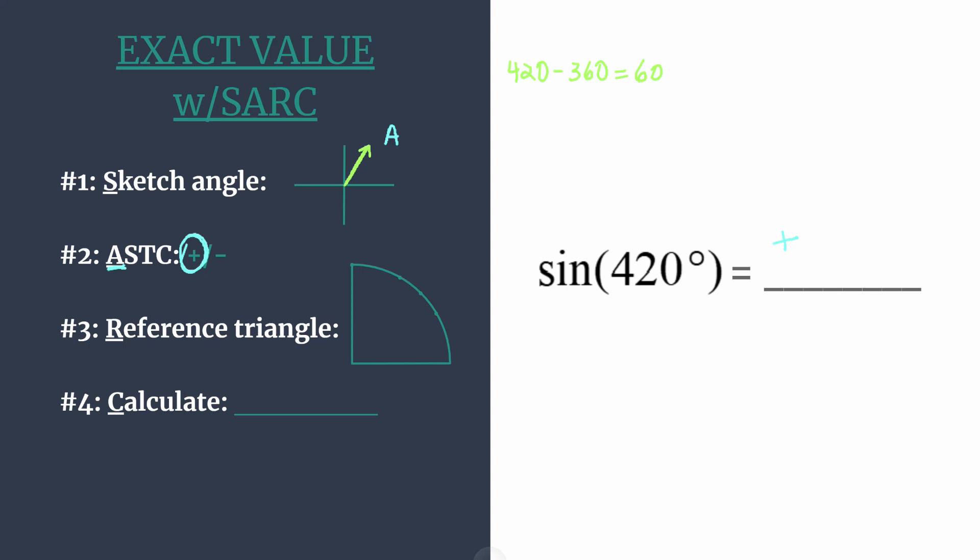If your angle's terminal side was in the other quadrants, you can see you just work your way around. The S goes to quadrant two, so sine and its reciprocal are the only ones positive there. T in quadrant three for tangent and cotangent being positive. And C in quadrant four, meaning cosine and its reciprocal secant are positive there. All right, so we know our final answer will be positive. And now we can move on to our reference triangle.